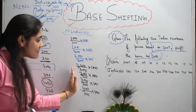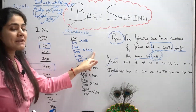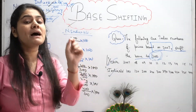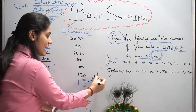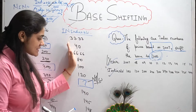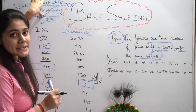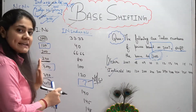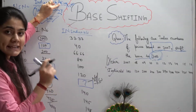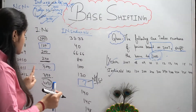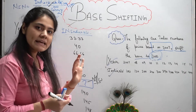फटाफट calculate करो — 100 by 300 multiply by 100, 120 by 300 multiply by 100। Point के बाद 2 digits तक answer लिखना। यह आपका homework है — जिसका answer अभी के अभी comment section में लिखो। 420, 435, 444 का भी आप निकाल सकते हो। Formula याद रखो: Index number with old base ऊपर, Index number of new base year नीचे, into 100।